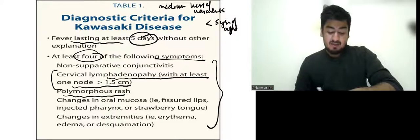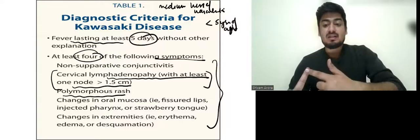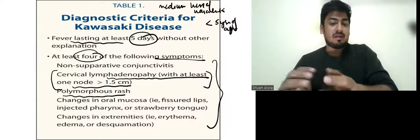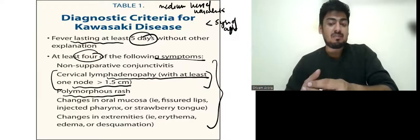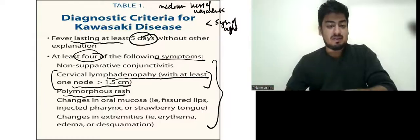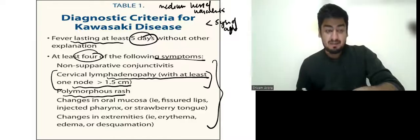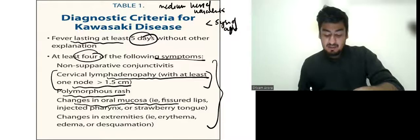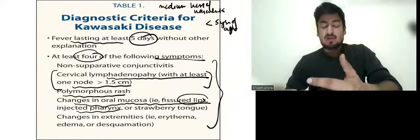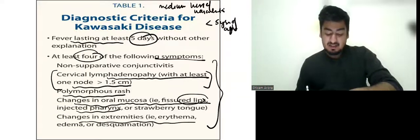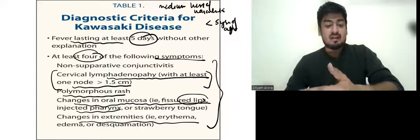Cervical lymphadenopathy is very common in Kawasaki disease — there is a different name for the disease based on this lymphadenopathy, which you can share in the comments. Other symptoms include: polymorphous rash; changes in oral mucosa such as fissured lips, strawberry tongue, or injected pharynx; and changes in extremities in the form of erythema, edema, or desquamation.